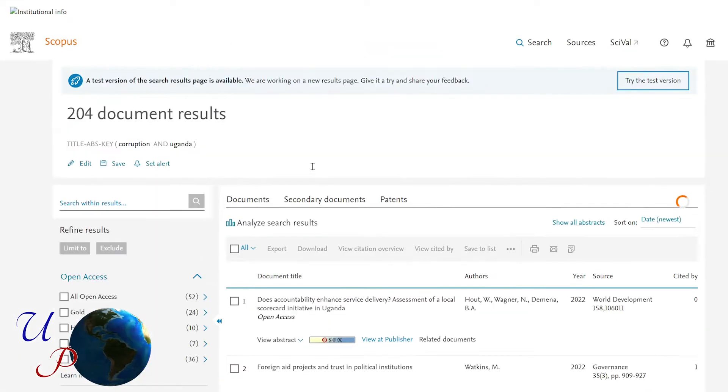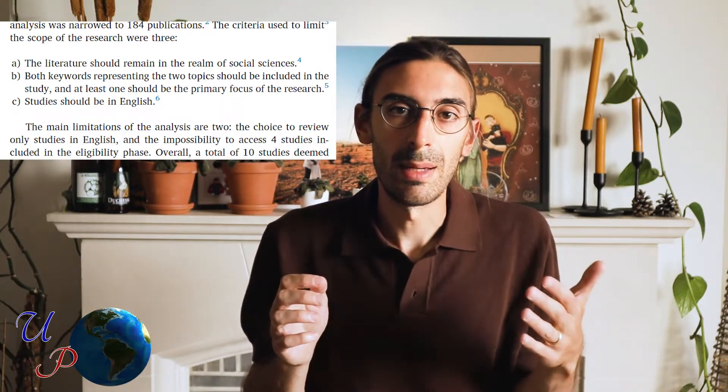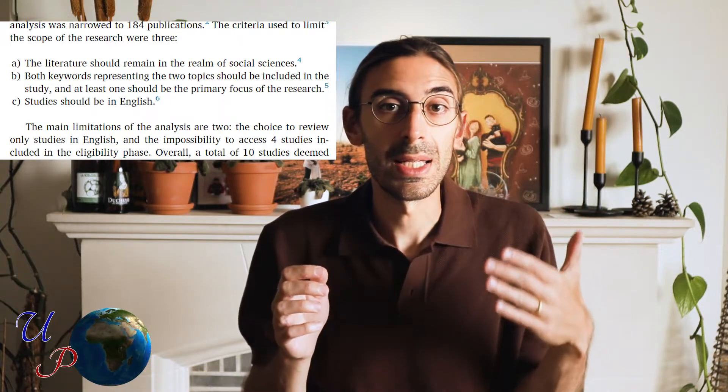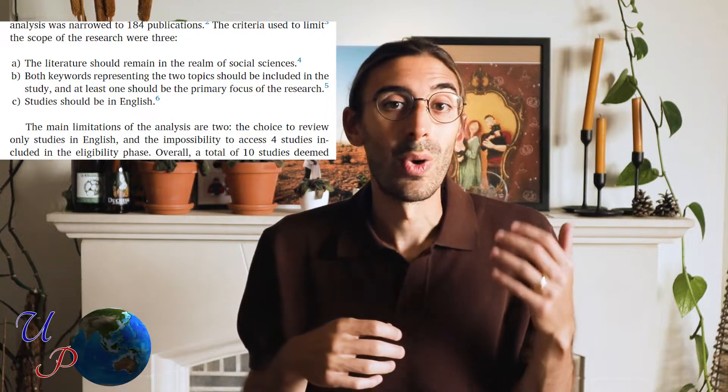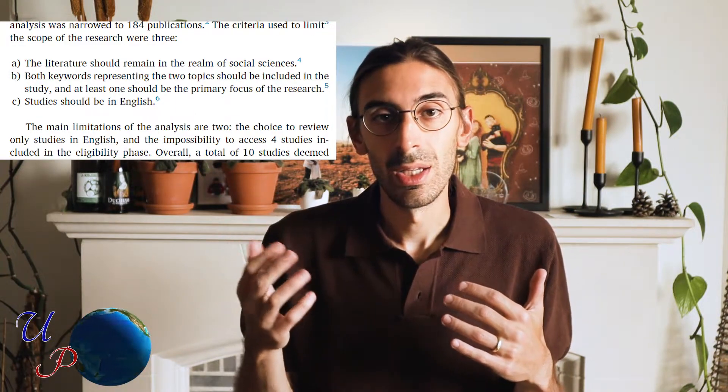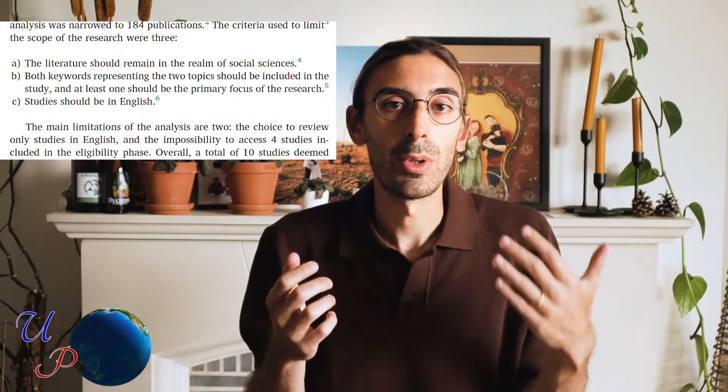If the topic is corruption in Uganda, the operationalization will produce two keywords — corruption and Uganda — and the database will show a smaller number of entries. At this point, the researcher should create a few criteria to identify the sample of the study, namely the literature to read. While these criteria are conceived to create the sample, they may also give a more precise picture of the population. For example, the criterion that all studies should be in the realm of social sciences reduces your sample, but it also allows the researcher to exclude studies originally included due to the inherent ambiguity of the keyword — such as 'corruption of digital images' when simply searching 'corruption' in Scopus. The creation of these predetermined criteria is what makes the sampling of the literature potentially unbiased.